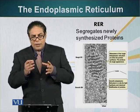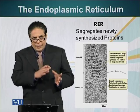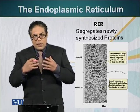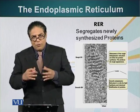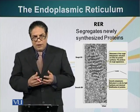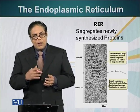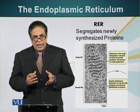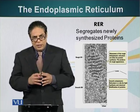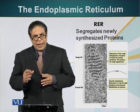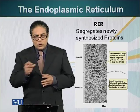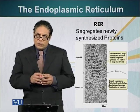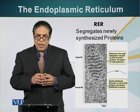Proteins are injected into the endoplasmic reticulum because they must first be modified. The rough endoplasmic reticulum has special enzymes that modify these proteins by adding sugar molecules to them. This process is called glycosylation.